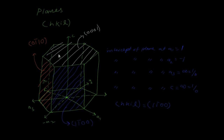For the second plane: the intercept with a1 is infinity (parallel), giving h = 0. The intercept with a2 is in the negative direction, cutting at one, giving k = 1̄. The intercept with a3 is at one, giving i = 1. The intercept with c is infinity, giving l = 0. So the indices are 0 1̄ 1 0.